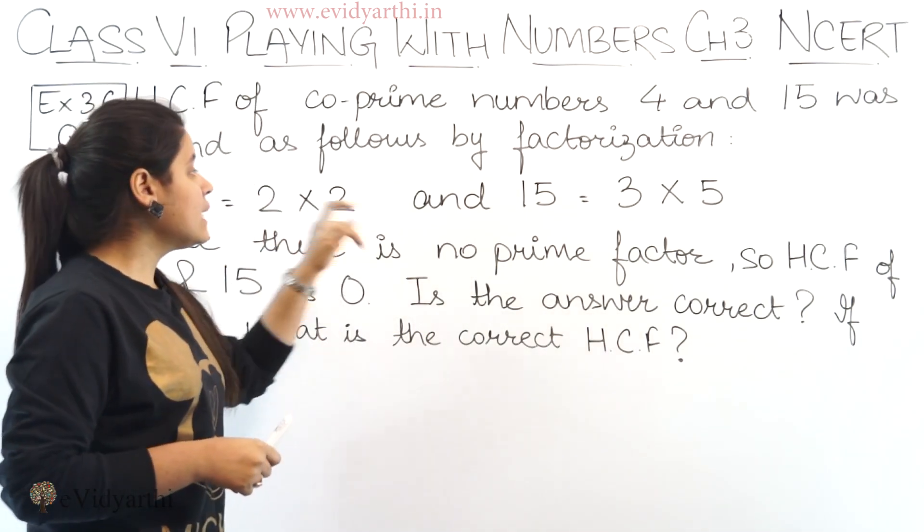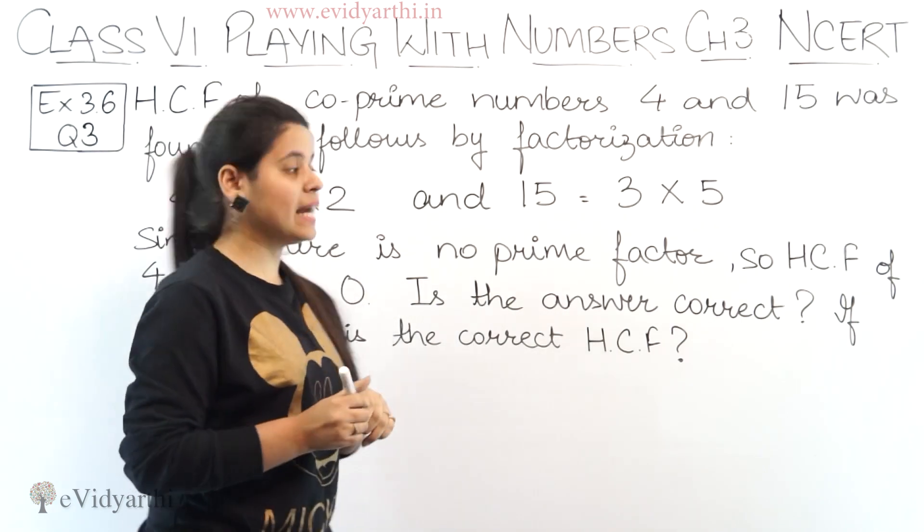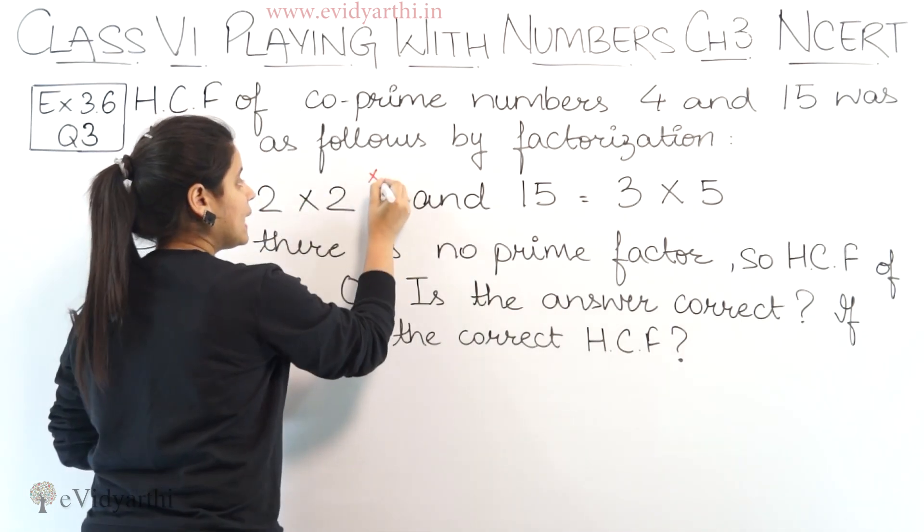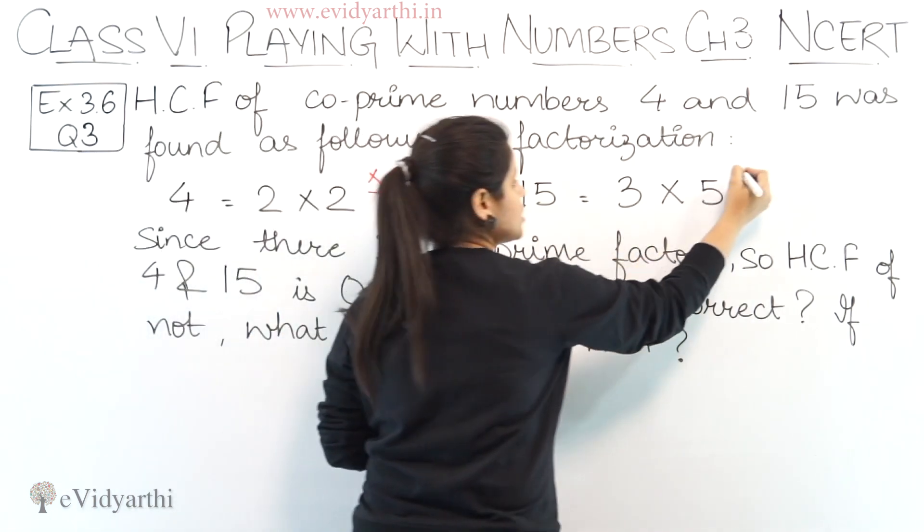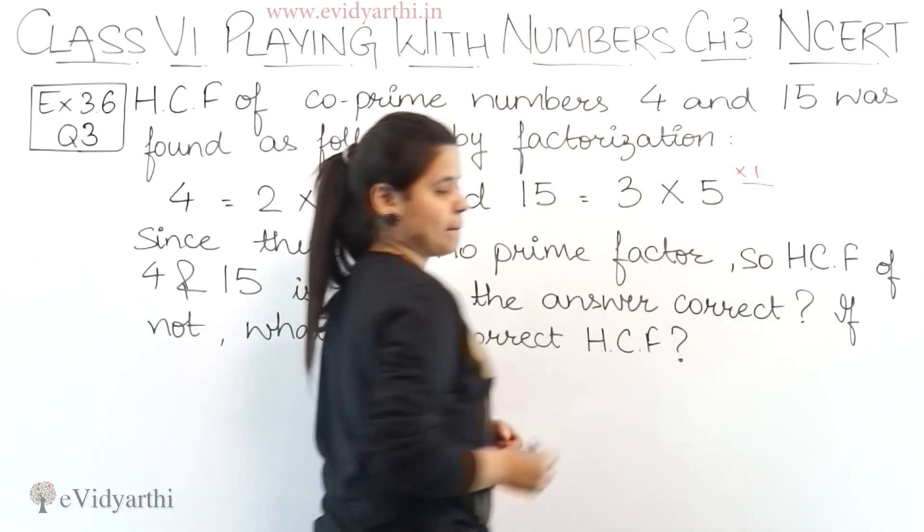Because if two numbers have no common factor, we are forgetting that one common factor can exist which is 1. Right?